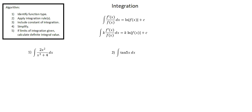And a more general rule: the integral of k times the derivative of a function over the original function with respect to x is k times the natural log of the absolute value of the original function plus c. It's this second, more general rule that we'll be using in both of our examples.